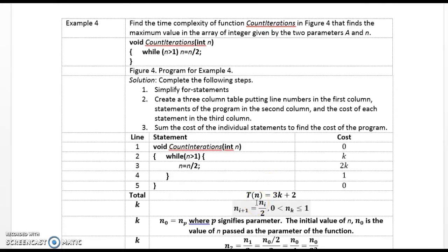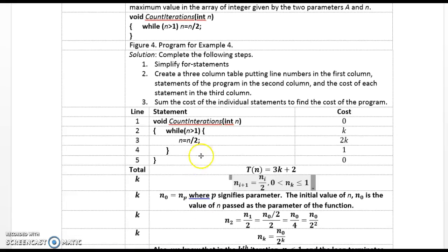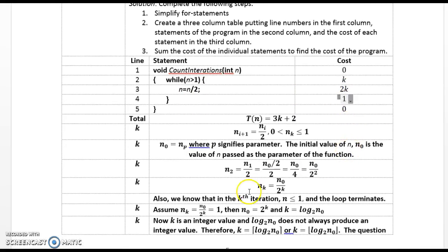So here we're going to find the time complexity of counting iterations. We just have a simple loop here, while n greater than 1, where n is equal to n divided by 2. So we don't know how many times this loop is executed, so we put k there. Well, however many times this loop is executed true, then the statement n is equal to n divided by 2, there are two operations there, so it's 2k.